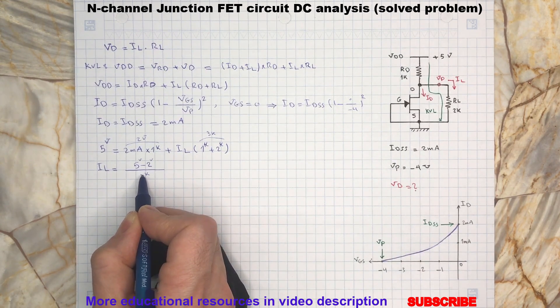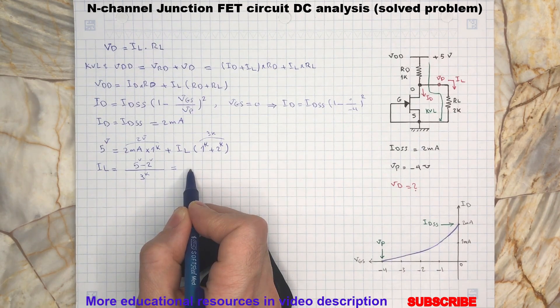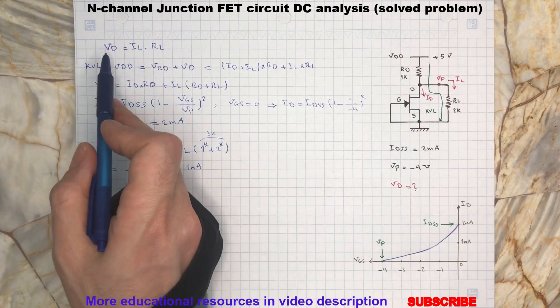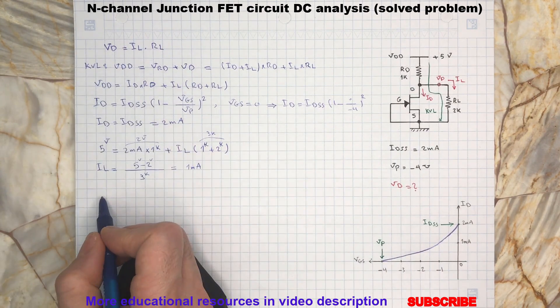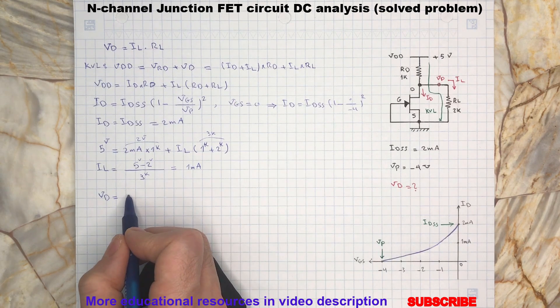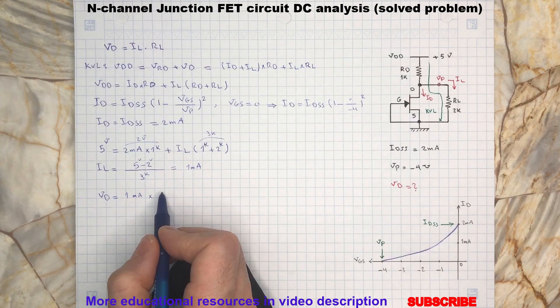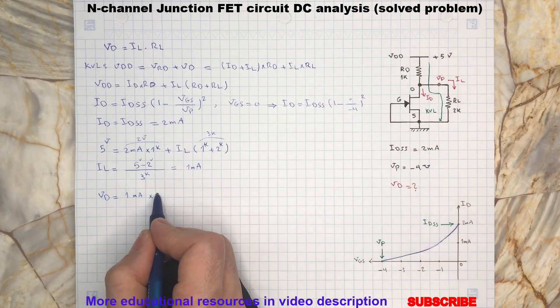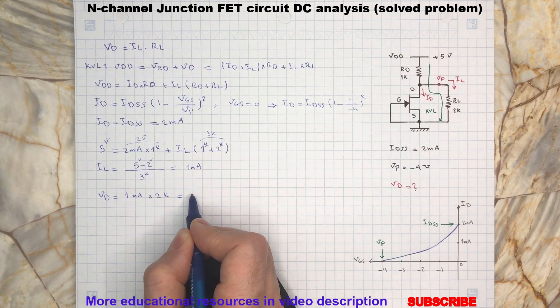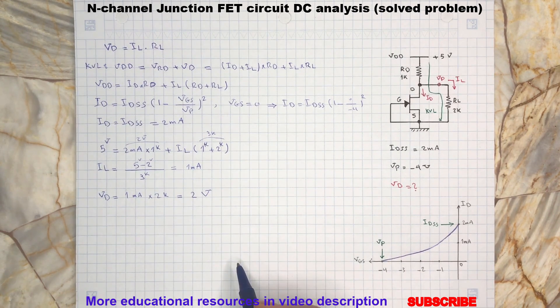1 milliamp, multiplied by RL, which is 2 kiloohms, so it will give us 2 volts. If you found this video